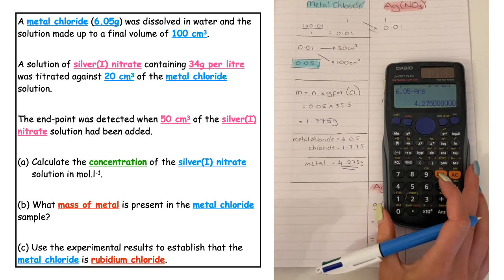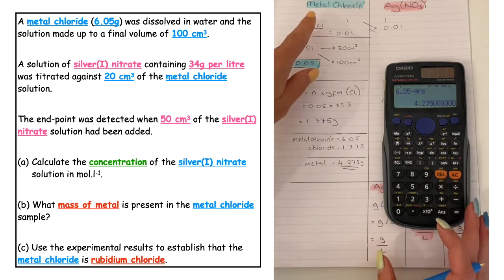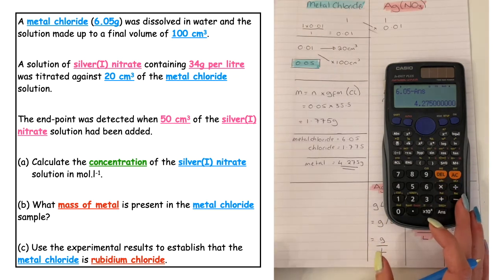Part C asks us to use the experimental results to establish that the metal chloride is rubidium chloride. Rubidium is found in group 1 of the periodic table. It's got a valence of 1, which works alongside our hypothesis that we thought this metal would have a valence of 1.